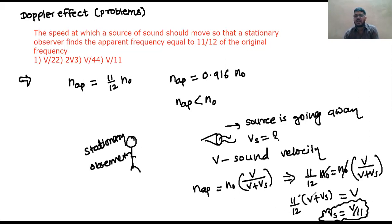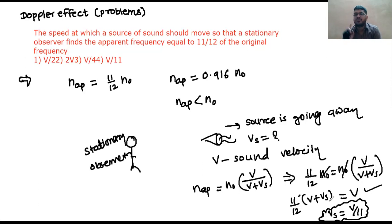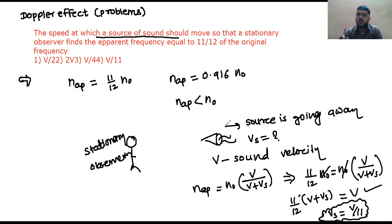I have given all the guidelines — just substitute the values. Do it yourself: 11/12 × (V + Vs), transfer the term and get the value of Vs. Pause the video, take two minutes, solve this question, then go to the next slide.